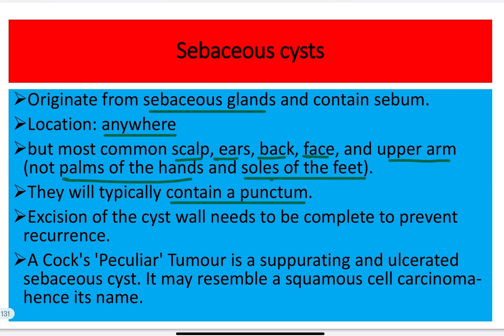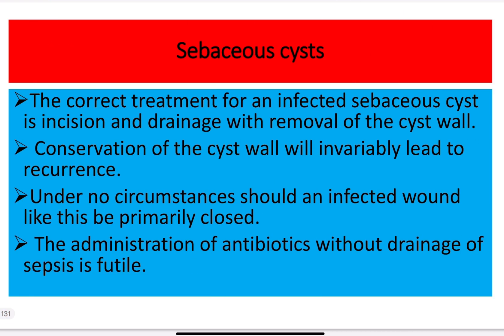Excision of the cyst wall must be complete to prevent recurrence. If the cyst wall is left behind, secretion will occur again from the remnant wall, leading to development of another sebaceous cyst. Cock's peculiar tumor is a suppurative and ulcerated sebaceous cyst — a suppurative and ulcerous sebaceous cyst known as Cock's peculiar tumor — and it may resemble squamous cell carcinoma, meaning it can mimic squamous cell carcinoma.